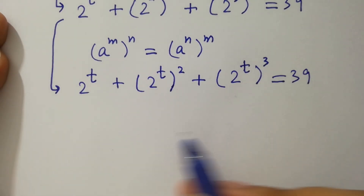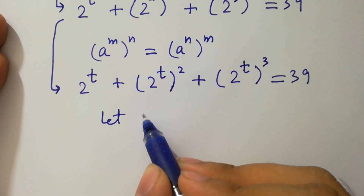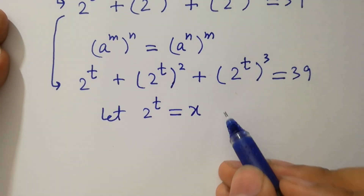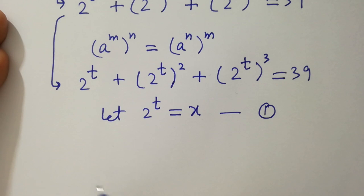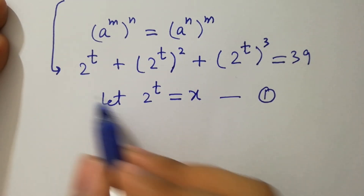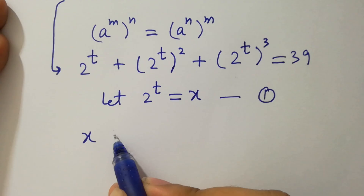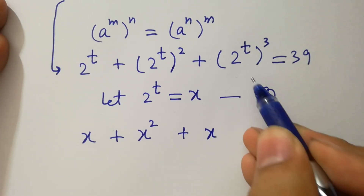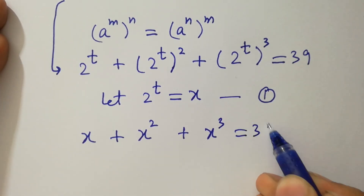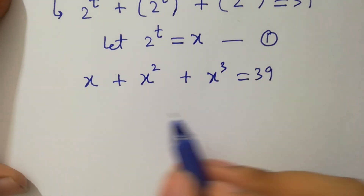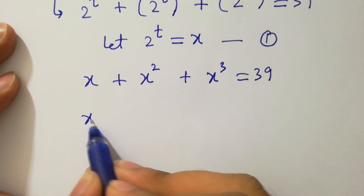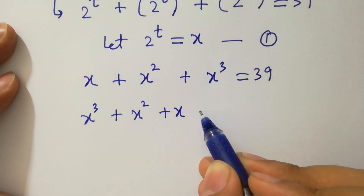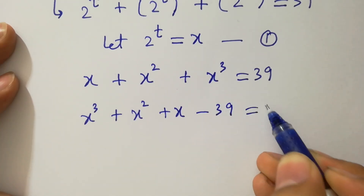Let's suppose that 2 to the power t equals x. This is our first equation. We have here x plus x squared plus x cubed equal to 39.